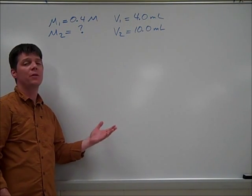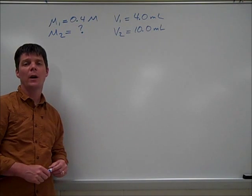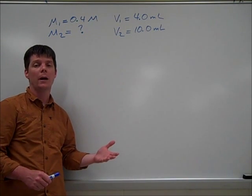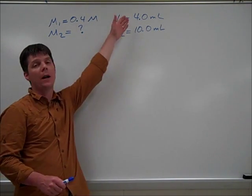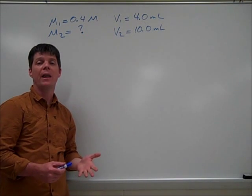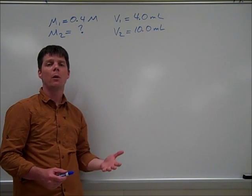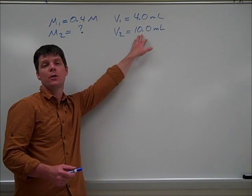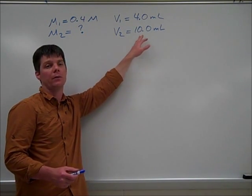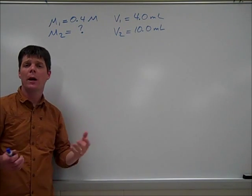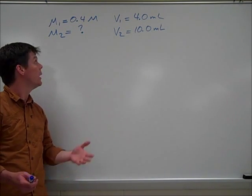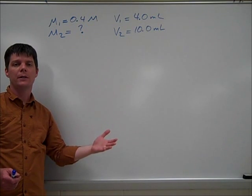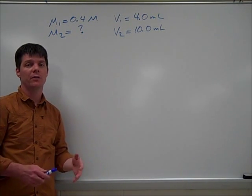In this problem, we were told that we were starting with a concentration of 0.4 molar iron chloride, and we had a volume of 4 milliliters of that iron chloride solution. We're told that we're going to dilute that iron chloride by adding additional water to a total volume of 10 milliliters. The thing that we're trying to find here, our unknown variable, is what is that new molarity going to be after we've diluted our sample.